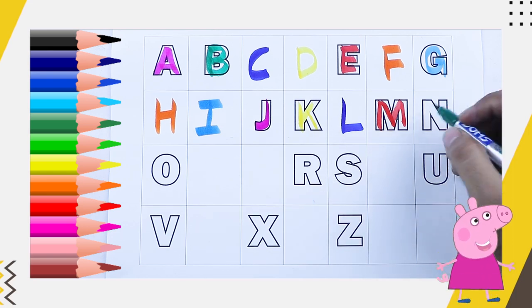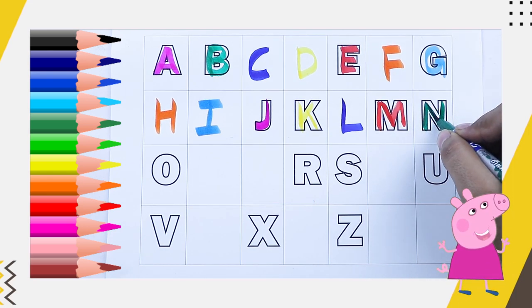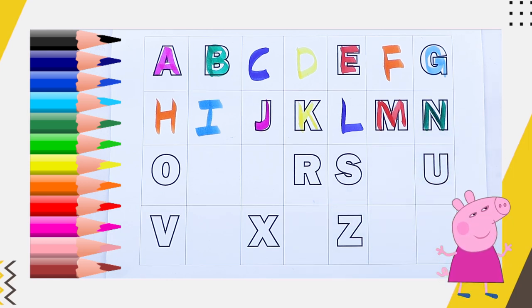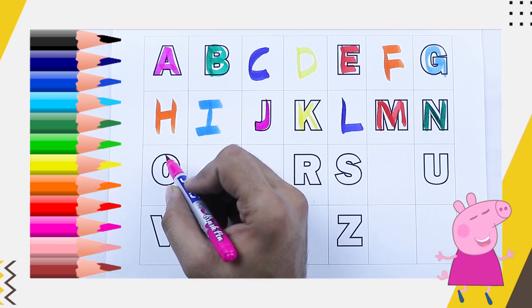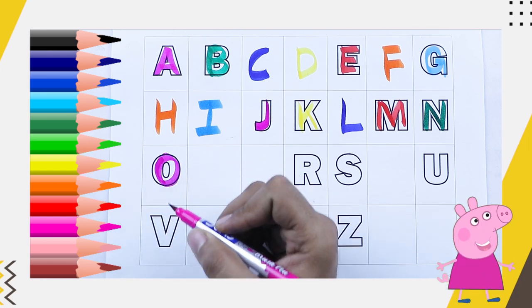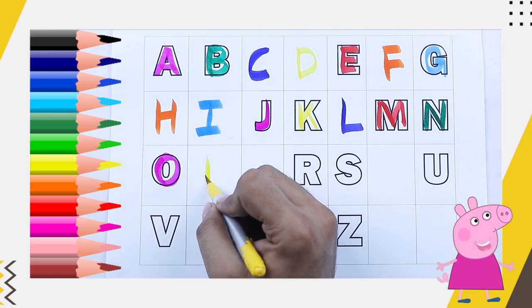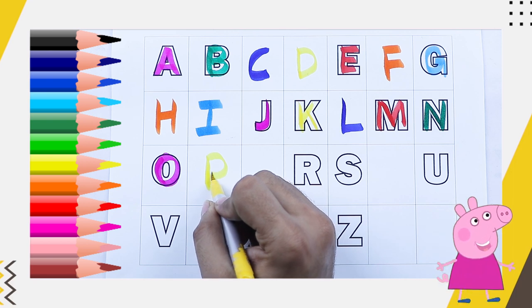What next? N, green color, capital N, N for nest. Pink color, O, O for octopus. What next? P, P, P for parrot.